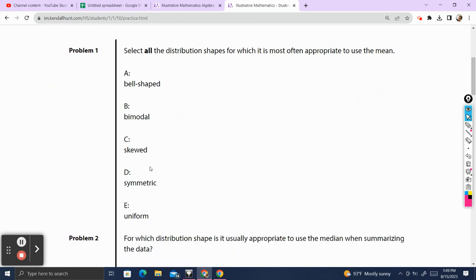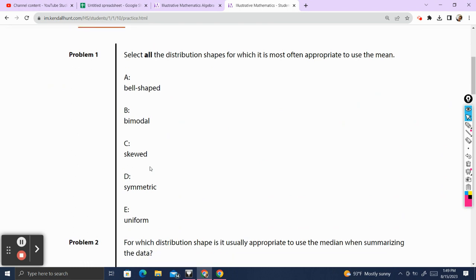Problem number one. Select all distribution shapes for which it is most appropriate to use the mean. All right, so we want to identify all the different distribution shapes. I'm going to quickly just draw a little picture of each one because that helps me visualize things. We got symmetric and uniform.